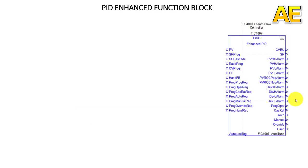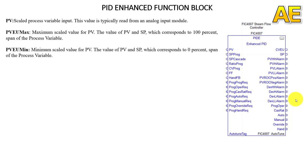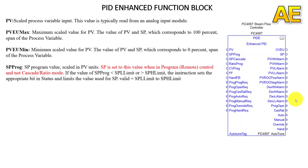Next I will talk about the PID function block inputs and outputs. The first input is PV — the scaled process variable input, typically read from an analog input module. The second is PV EU max — the maximum scaled value for PV, corresponding to 100% or full span of the process variable. The next is PV EU min — the minimum scaled value for PV, corresponding to 0% span of the process variable. The next is SP Program — the setpoint value set by the program, scaled in PV units. SP is set to this value when in program or remote control and not in cascade or ratio mode.